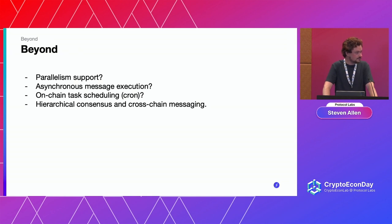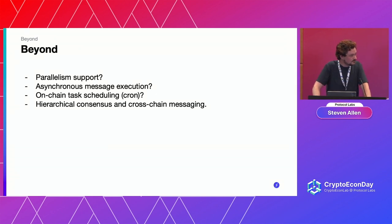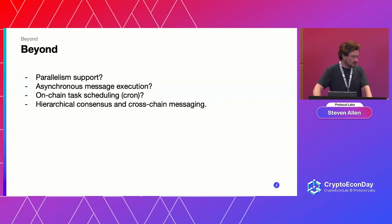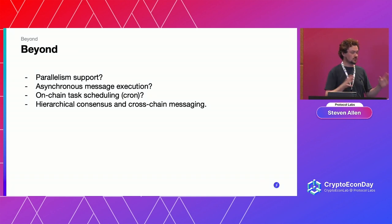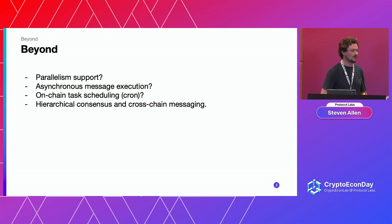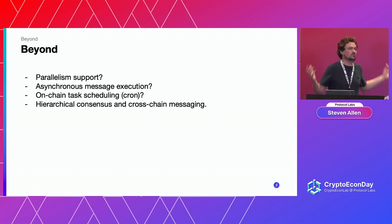Q: If I use the FVM to run an Ethereum smart contract, does it get executed on Filecoin or on the Ethereum network? And do I have to pay gas on both networks? A: It gets executed on the Filecoin network and you pay Filecoin gas with FIL. It brings the programming and all the tooling to the Filecoin network, but it's not a bridge between Ethereum and Filecoin. We're not trying to extract value out of the Ethereum network — we're just trying to reuse all the tooling and stuff people have already built so people don't have to rebuild everything from scratch.